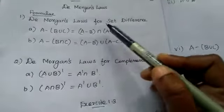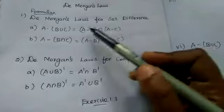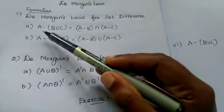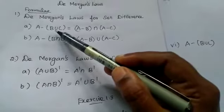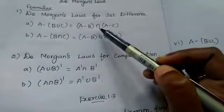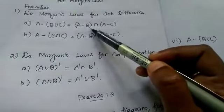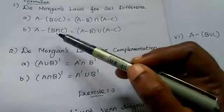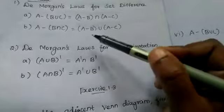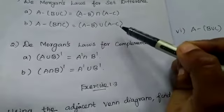The first law is De Morgan's law for set difference. First, A difference (B union C) equals (A difference B) intersection (A difference C). Next one is A difference (B intersection C) equals (A difference B) union (A difference C).